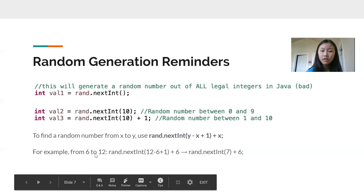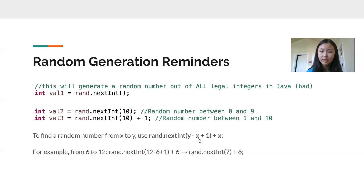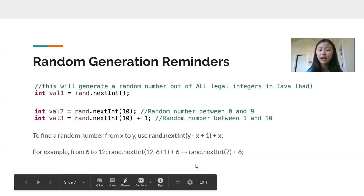Here's another example. Six is the lower bound — that's our x — and 12 is the upper bound, which is our y. We plug it in again: rand.nextInt(12 - 6 + 1) + 6, which simplifies to rand.nextInt(7) + 6.